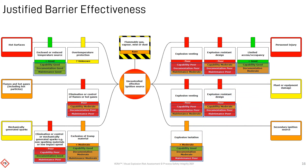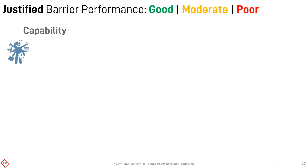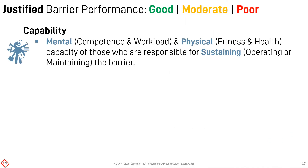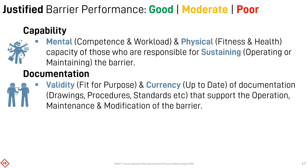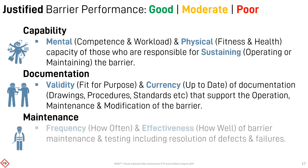To support the selection of barrier effectiveness, the assessment may consider the key components that sustain it, e.g. how good are the associated people, processes, and plant. The personnel who ensure the presence and performance of the barriers must themselves perform effectively. The paperwork which guides the planned and unplanned barrier tasks must be accurate and accessible. Barriers must be well looked after to ensure they are fit for duty or service.